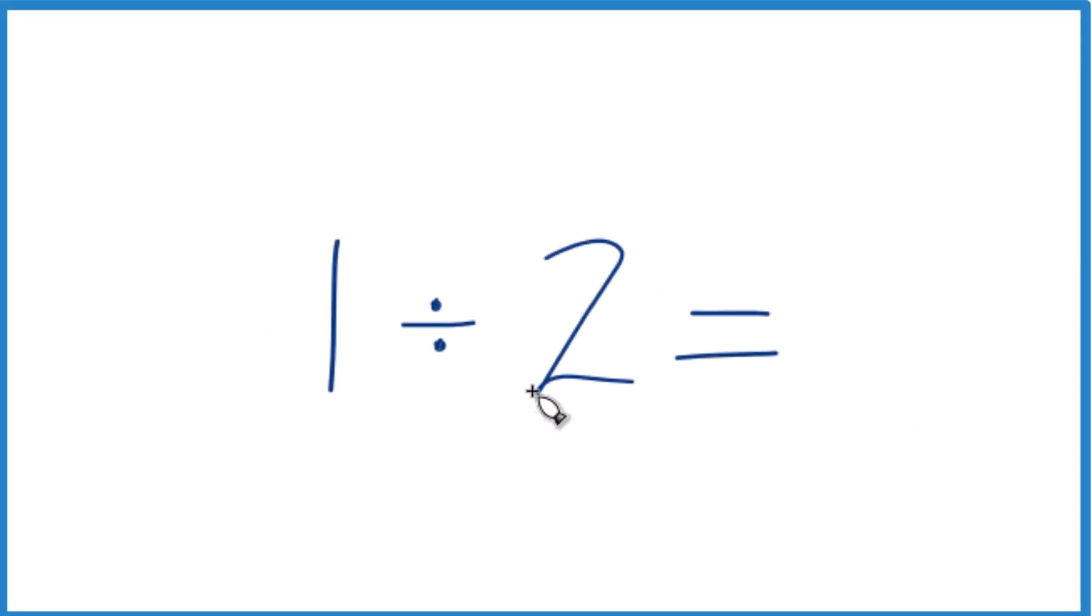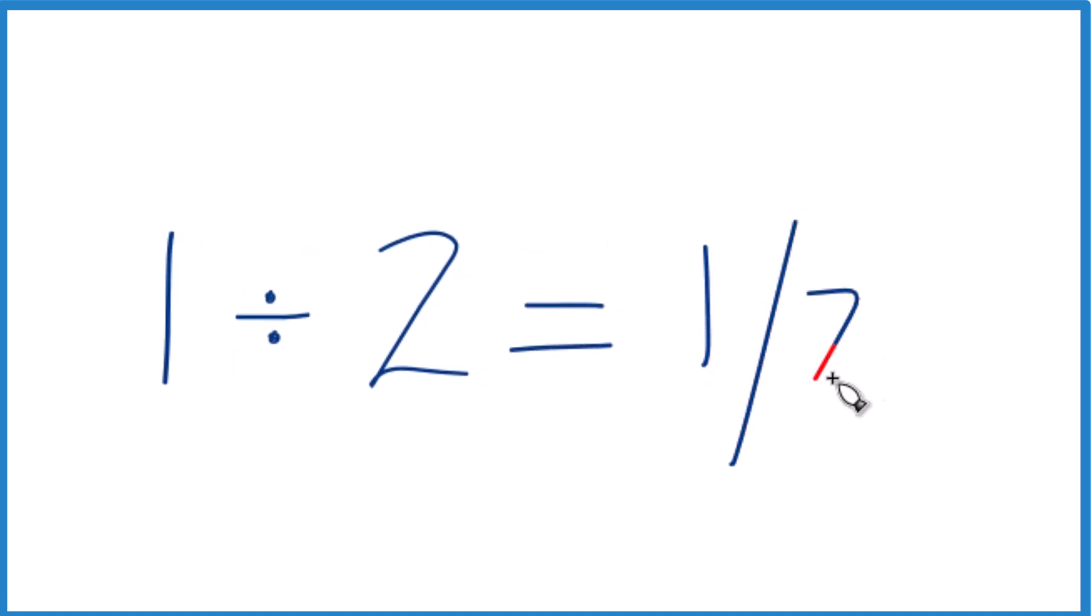Let's divide 1 by 2. And here's the way you could think about it. 1 divided by 2, that's just 1 over 2. It's the fraction 1 half.